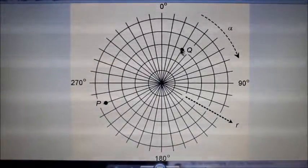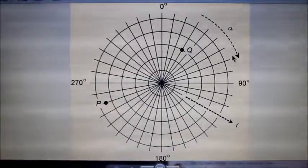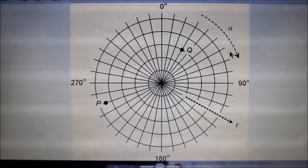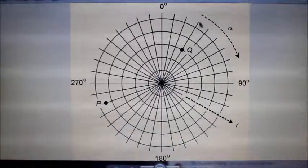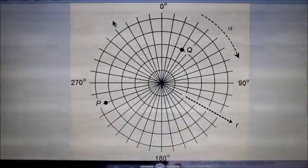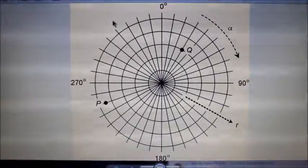So the ordered pair alpha comma r equals 30 degrees, 300. Again, choice E is correct here.